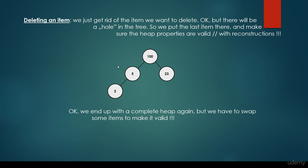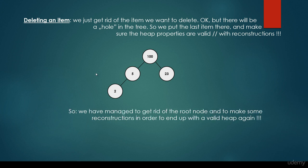If we are considering this subtree, then the parent is 5 and the left child is 2, so the parent is greater again. So it is a valid heap. We have managed to get rid of the root node and to make some reconstructions in order to end up with a valid heap again.